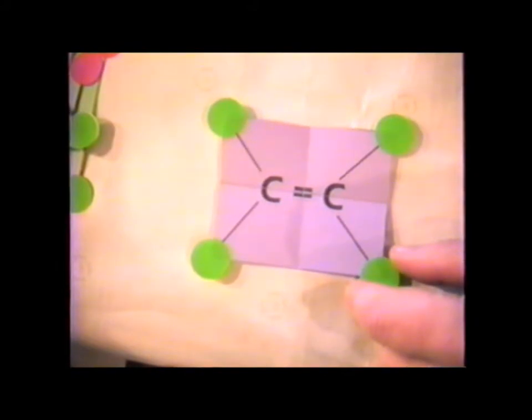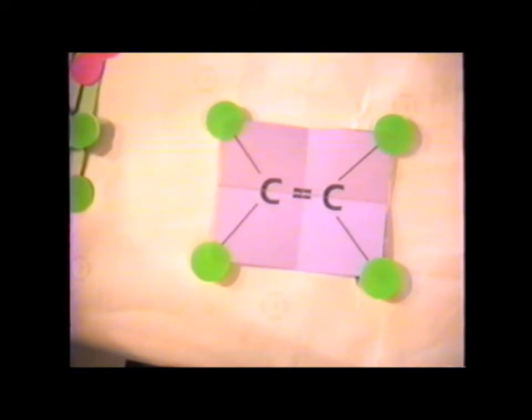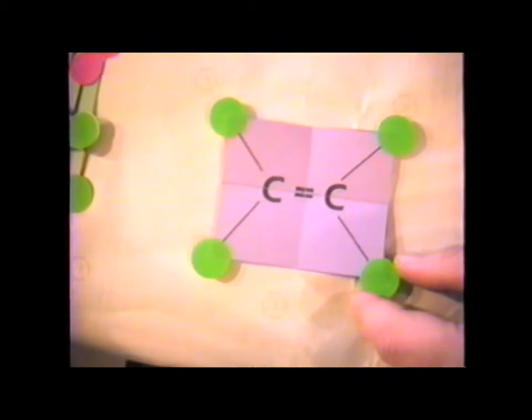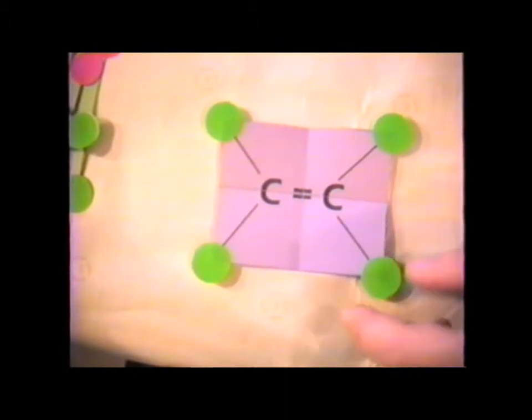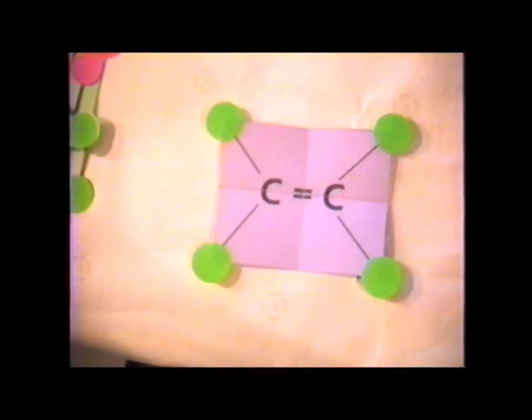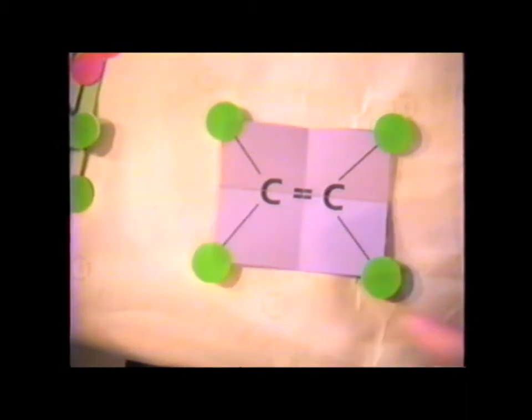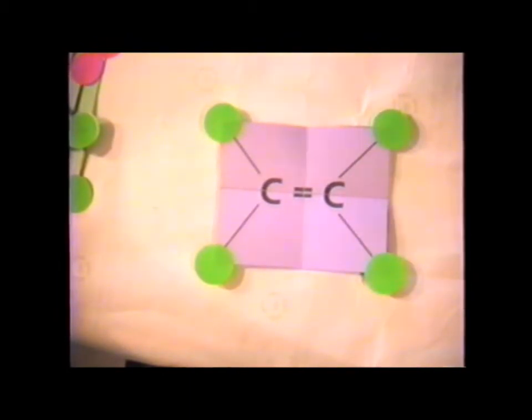With ethylene, we see that we have a C double bond C in the center, and in the same plane. If we have ethylene, each of the four green dots would be a hydrogen atom. This particular molecule has a point group symmetry which we call D2H, and we'll show in a second to prove that it has a D2 rotation.